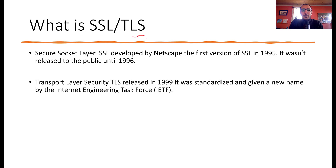What is TLS and what is SSL — why are there two names? The functionality of both is the same, but the naming has changed over time. It started with Secure Socket Layer (SSL), which was developed by Netscape. The first version of SSL was developed in 1995 and wasn't released until 1996. The first versions were SSL 1.0, 2.0, and 3.0.